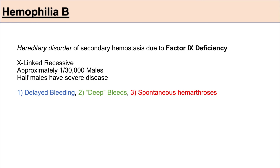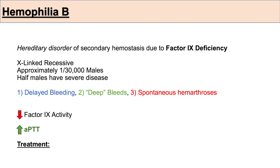Like hemophilia A, hemophilia B presents with delayed bleeding, deep bleeds, and spontaneous hemarthrosis. Lab investigations show a decreased activity of factor IX and an increased PTT, but INR and PT are otherwise normal. Treatment of hemophilia B involves factor IX concentrate and tranexamic acid.